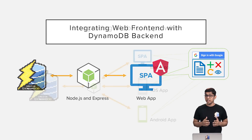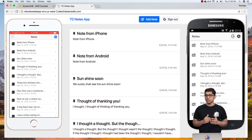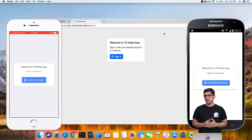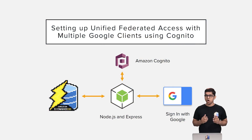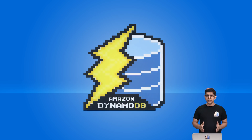We'll then take this further and integrate a highly scalable web application or a single page application with DynamoDB. And then we'll integrate DynamoDB with a highly scalable iOS app as well as an Android app. All three apps — web, iOS, and Android — will use Google login for user authentication. We'll do this by implementing social OAuth 2.0 based login with federated access using AWS Cognito.